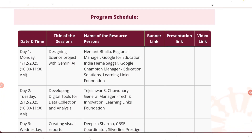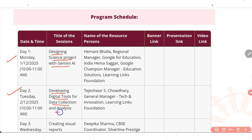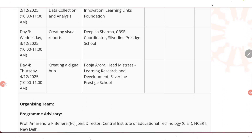Now let's look at the program schedule. Day 1 is 1st December — topic: designing science projects with Gemini AI. Day 2 topic: developing digital tools for data collection and analysis. Day 3: creating visual reports. And Day 4: creating a digital hub.